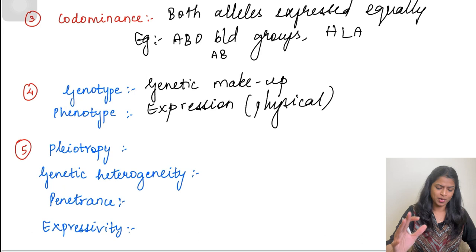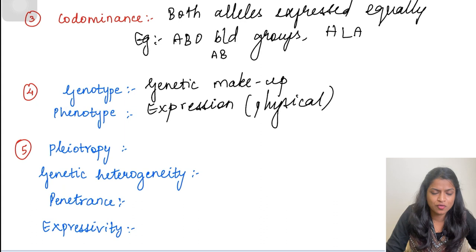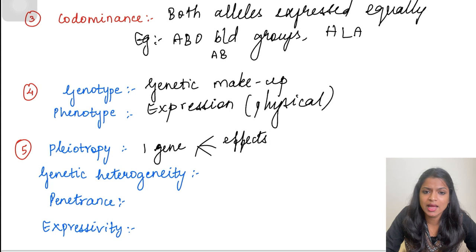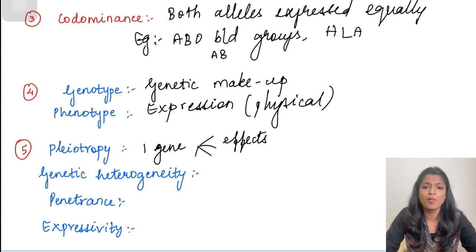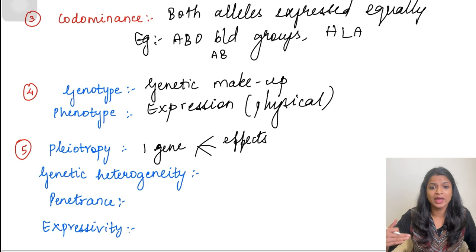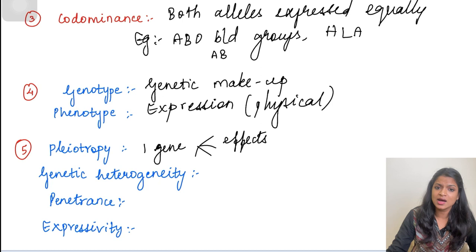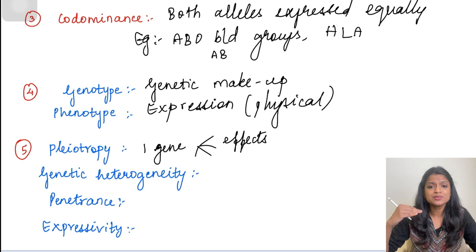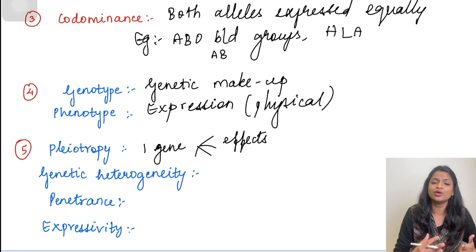Next is pleiotropy, which means a single gene has multiple effects. The example is sickle cell anemia, where there is a point mutation at a single nucleotide. Because of this, patients form hemoglobin S, which has various presentations: anemia, lots of infarct formation due to sickling, end organ damage, vaso-occlusion, and splenic autoinfarcts. A single gene mutation having various effects is called pleiotropy.